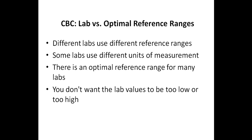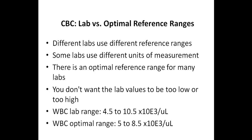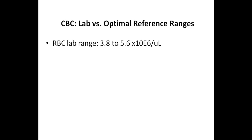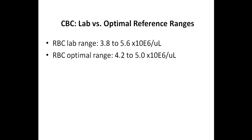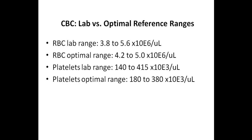Keep in mind that not every practitioner will agree on the same exact optimal ranges, but it should make sense that in most cases you don't want the lab values to be too low or too high. An example of a white blood cell lab reference range — this will vary depending on the lab — but in this case it's 4.5 to 10.5. The white blood cell optimal range would be 5 to 8.5. The red blood cell lab range would be 3.8 to 5.6, whereas the red blood cell optimal range would be 4.2 to 5.0. Platelets lab reference range is 140 to 415, whereas the platelets optimal range is 180 to 380.